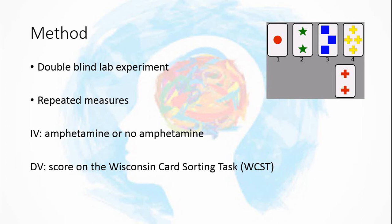Our independent variable is whether the person has had amphetamines or no amphetamines. The dependent variable - the thing that's going to change depending on whether they've taken that drug - is their score on the Wisconsin card sorting task, which we'll go through in a moment.